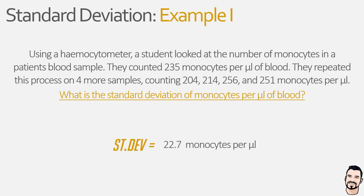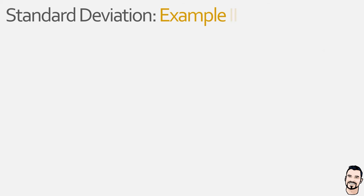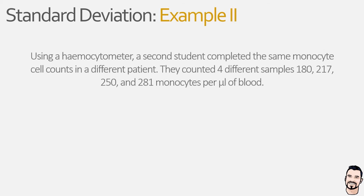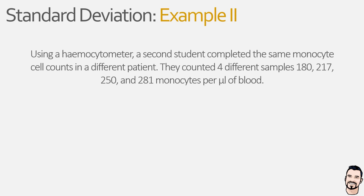So let's quickly look at a second example. Here we have a second student who is repeating the same experiment but with a different patient's blood sample. The student was a bit slower in the lab and only managed to complete four cell counts, identifying 180, 217, 250, and 281 monocytes per microlitre.